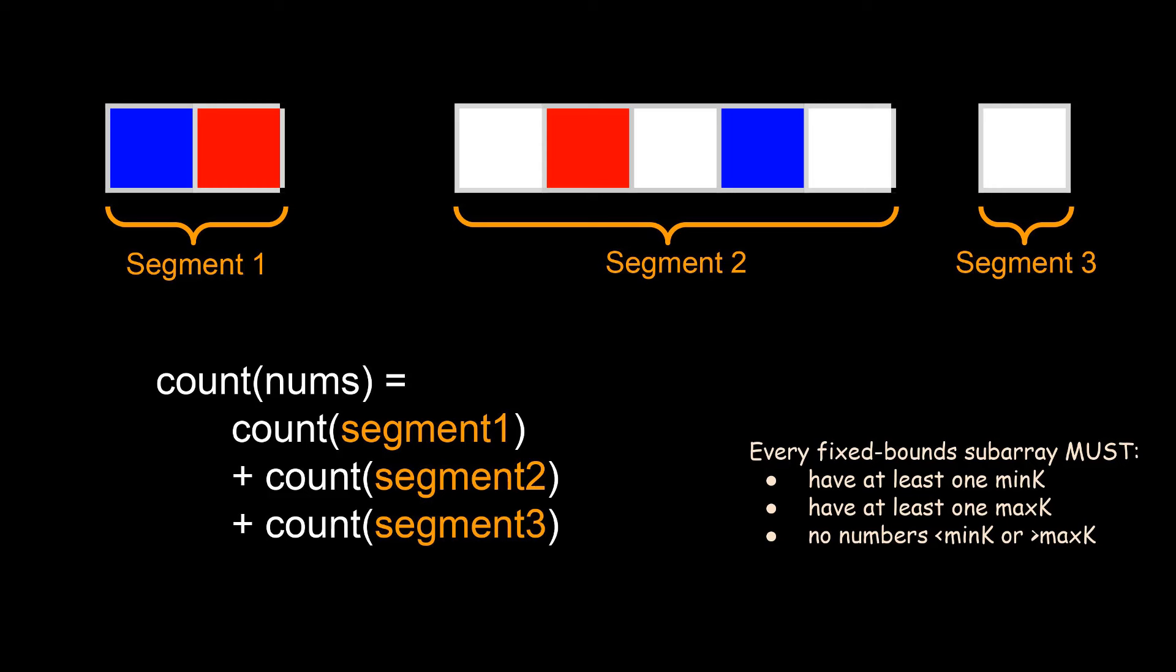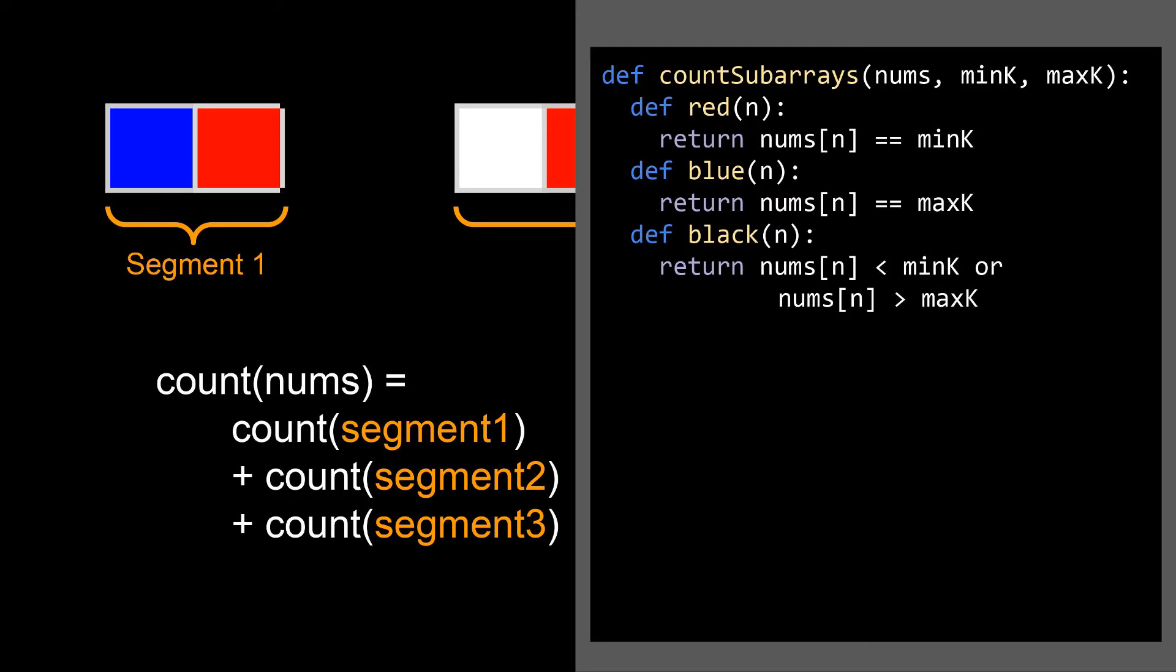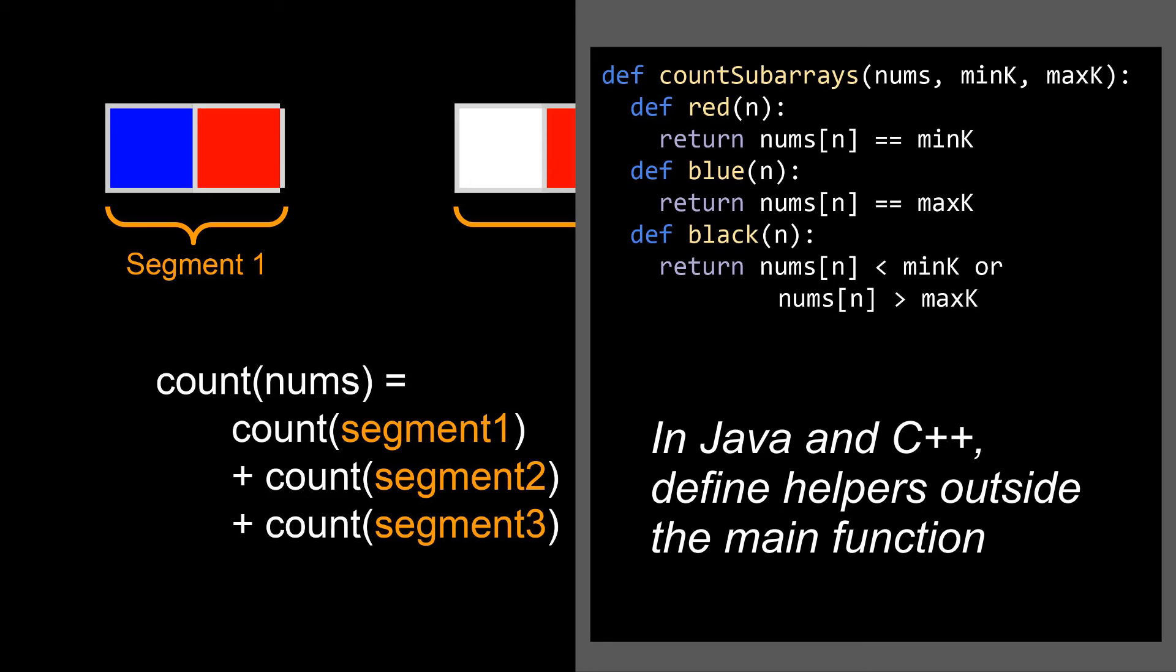Now, even though we don't know exactly how to solve the rest of the problem yet, we do know enough to start writing some code. The first thing we're going to do is add helper functions to figure out what type each particular cell is. You don't actually have to do this. You can do the manual comparison every time you want to check. But making helper functions make your life so much easier. In Python, you can actually define these functions inside a different function. But in Java and C++, you actually have to pull these helper functions outside the function. But I'm going to leave you to figure that out yourself.